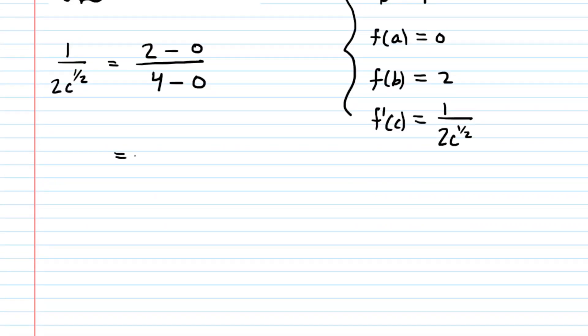Now on the right hand side we can simplify. We have 2 over 4, but of course that reduces to just 1 over 2. And then perhaps what we can do next is cross multiplication. When we cross multiply we're going to have 2c to the 1/2 times 1. So that's just 2c to the 1/2, and then we equate that to 2 times 1, which of course is 2.